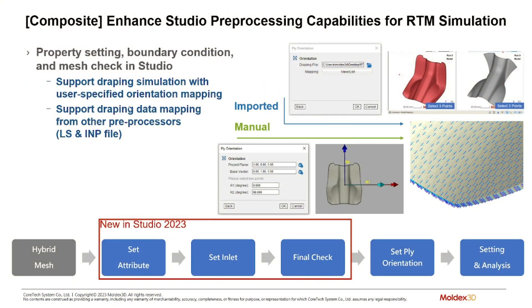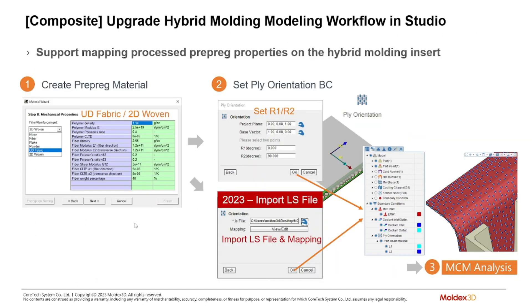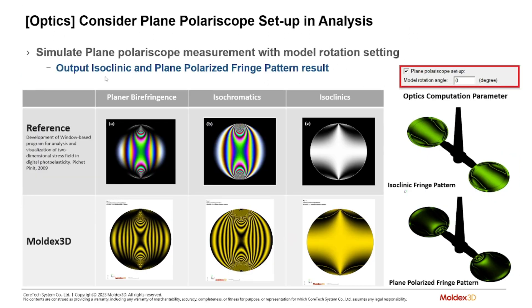Wrapping up with molding innovation: for RTM, we've improved the boundary condition setup and the mesh check inside Studio. Although most hybrid meshing still needs to be done in Rhino, we do have more hybrid meshing tools in Studio now. We have the ability to port over hybrid meshes and apply RTM attributions using the MoldX3D Studio wizards, and we can map over prepreg meshes using an LS file — setting R1 and R2 values in the material wizard and applying the properties of that fabric.